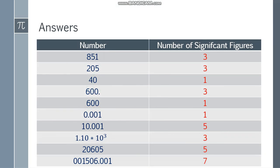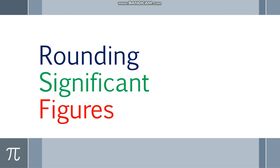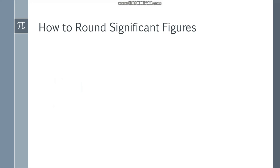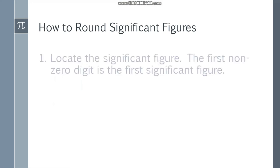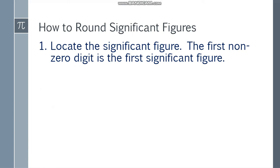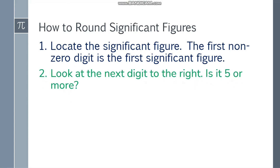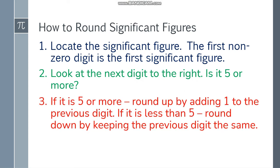Okay, let's move on to rounding significant figures. Paano ma-round ng significant figures? Una, ilalocate mo muna kung saan yung significant figure na yun — the first non-zero digit is the first significant figure. Next, tingnan mo yung next digit dun sa kanan. Kung 5 or more siya, then mag-round up tayo by adding 1 to the previous digit. Kung hindi naman, less than 5, then mag-round down tayo — keeping the previous digit the same or as is lang.